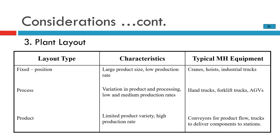A third consideration is plant layout. For a fixed-position layout, characteristics include large product size and low production rates, with typical equipment being cranes and hoists. For a process layout, characteristics include variation in product and processing with low to medium production rates, using hand trucks, forklift trucks, and AGVs. For a product layout, characteristics include limited product variety and high production rates, using conveyors and trucks to deliver components to stations.